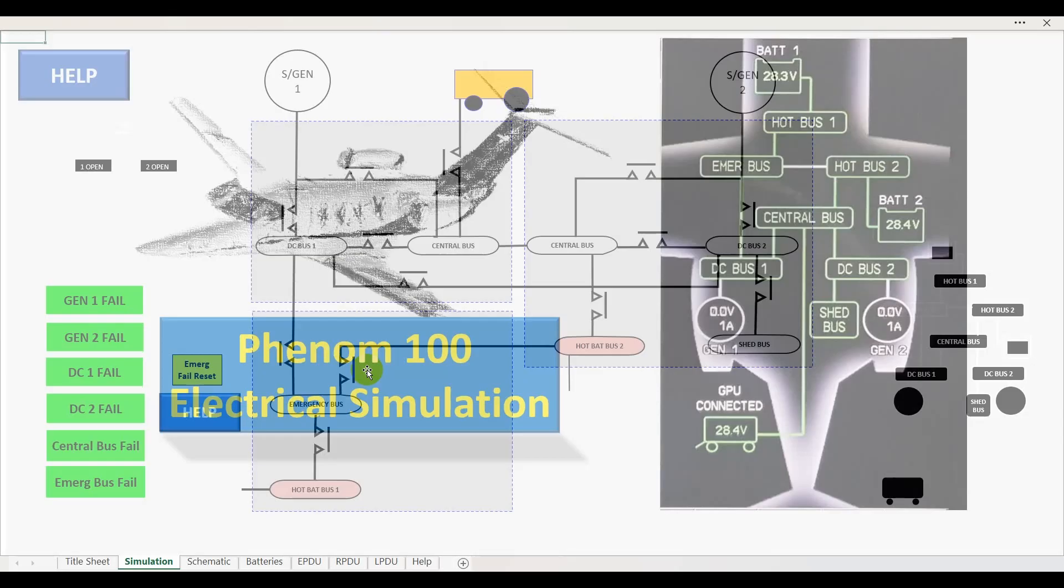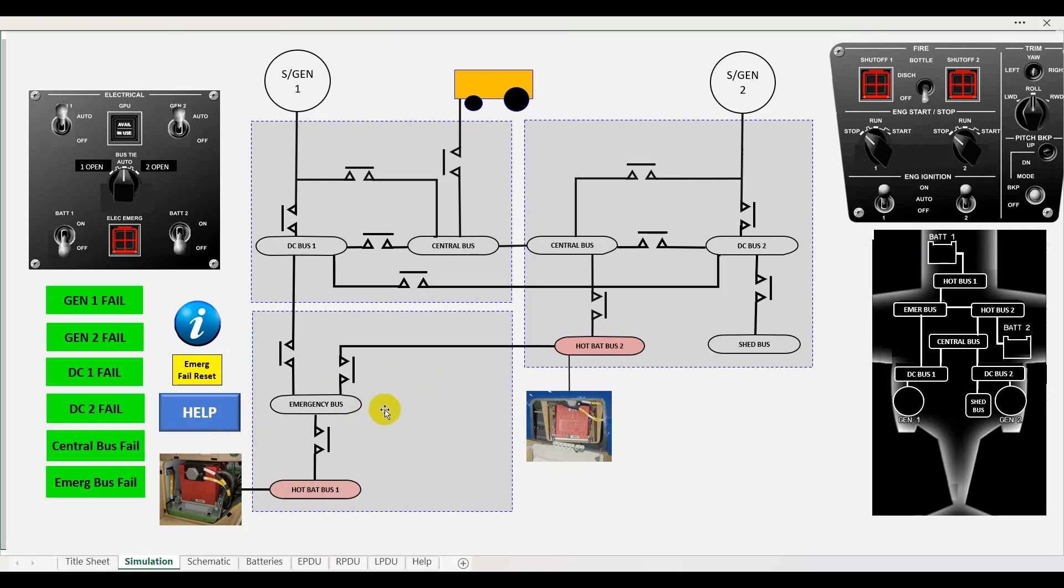When we click on the system, it opens up and shows us the electrical system pretty much as you would see it in the Embraer manuals.